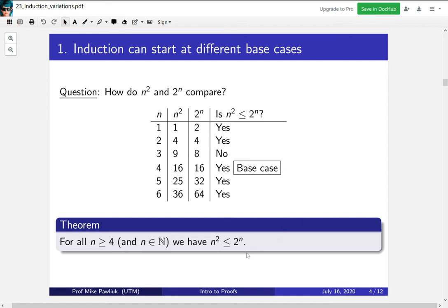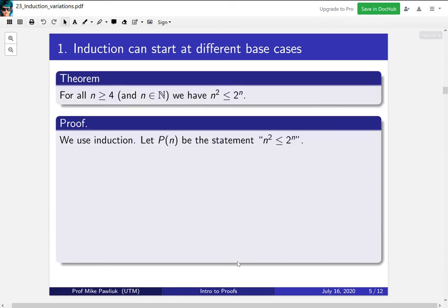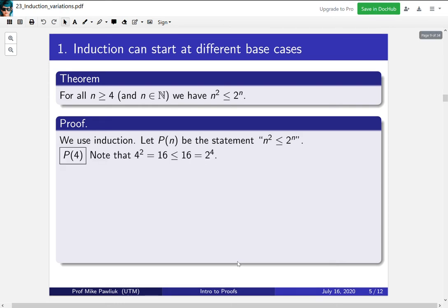So here's our theorem. For all natural numbers n greater or equal to 4, we have that n squared is less than or equal to 2 to the n. Let's prove this theorem. We're going to prove it by induction, and p(n) will be the statement n squared is less than or equal to 2 to the n. The base case we already computed, which was n equals 4.